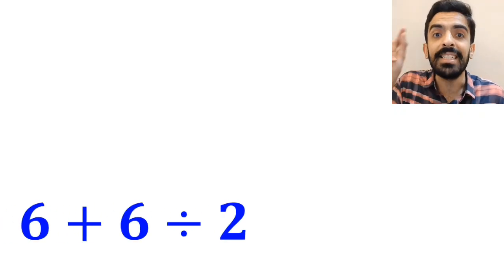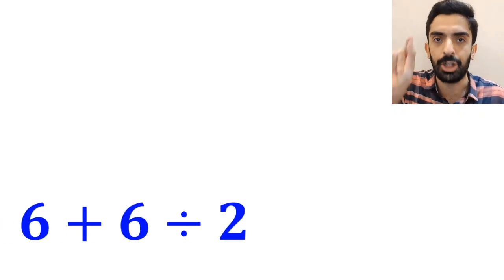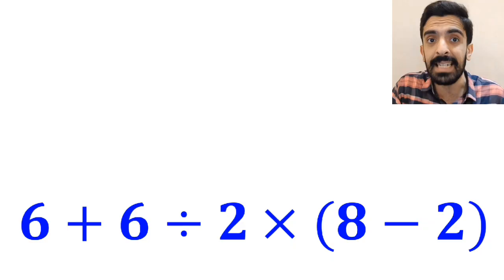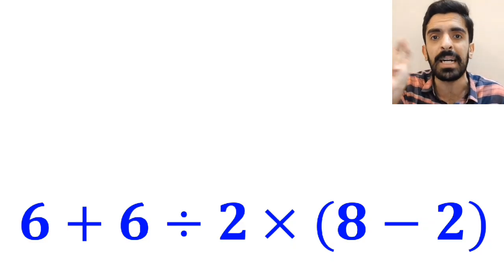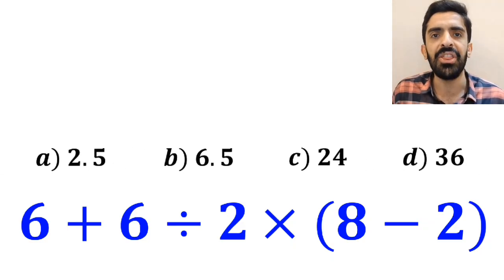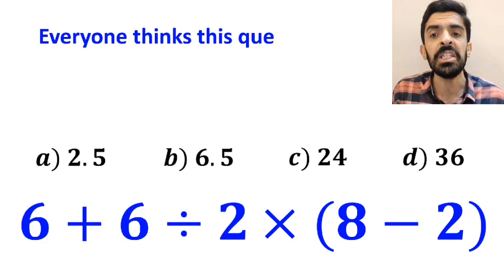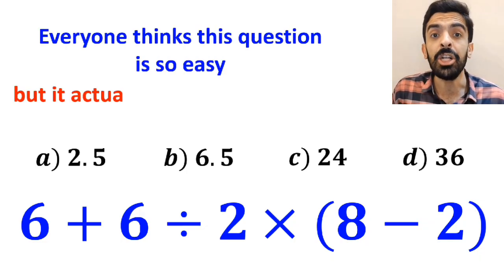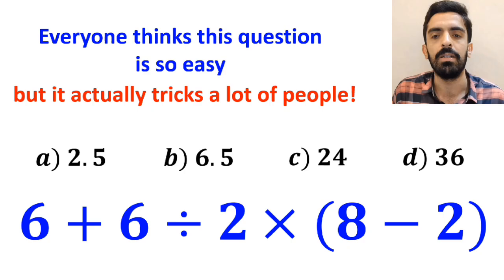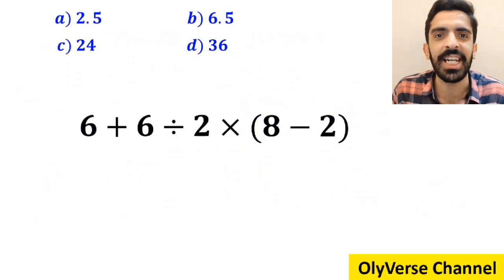What is the value of the expression 6 plus 6 divided by 2, then times open parenthesis 8 minus 2 close parenthesis? Which option do you think is the correct answer to this question? Everyone thinks this question is so easy, but it actually tricks a lot of people. Let's break it down and solve it together.